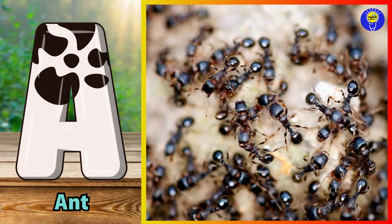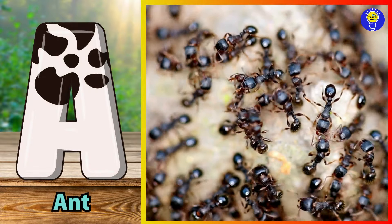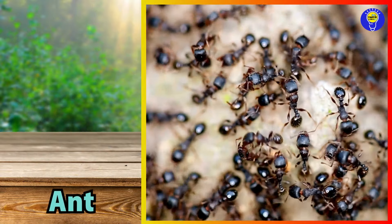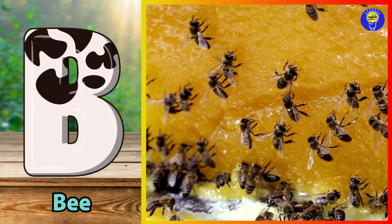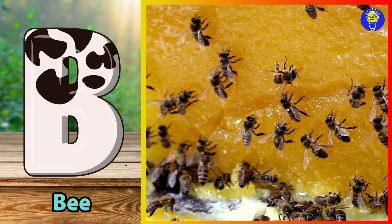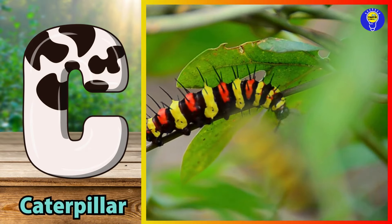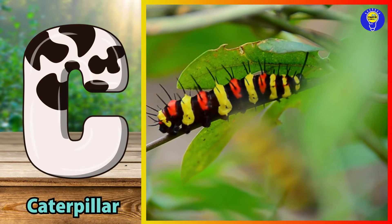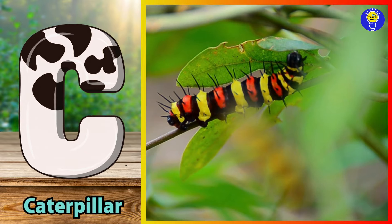A is for ant. A, a, ant. B is for bee. B, b, bee. C is for caterpillar. C, c, caterpillar.